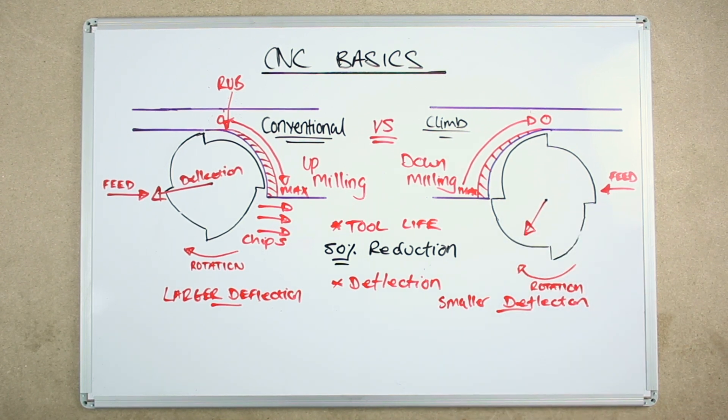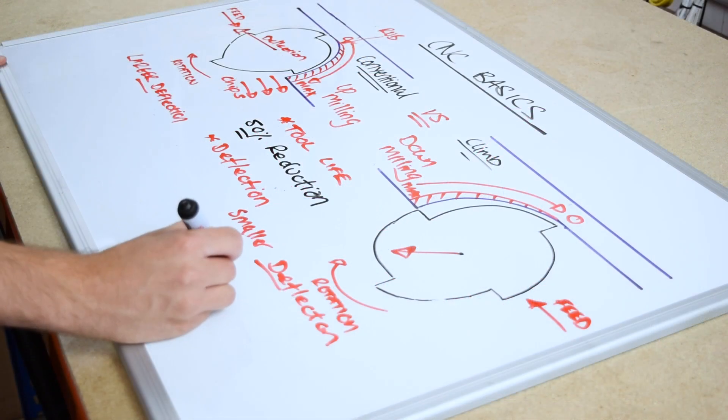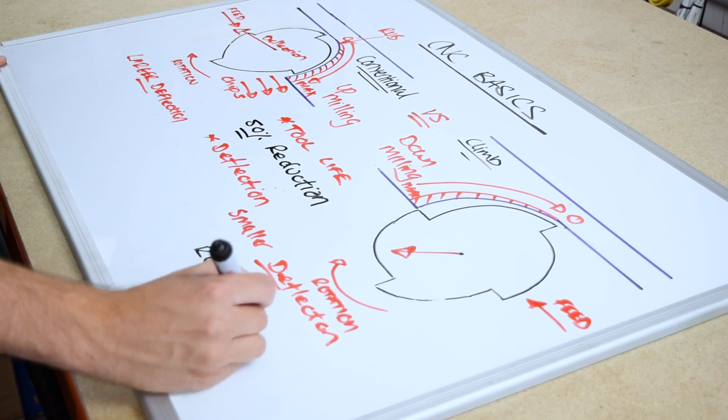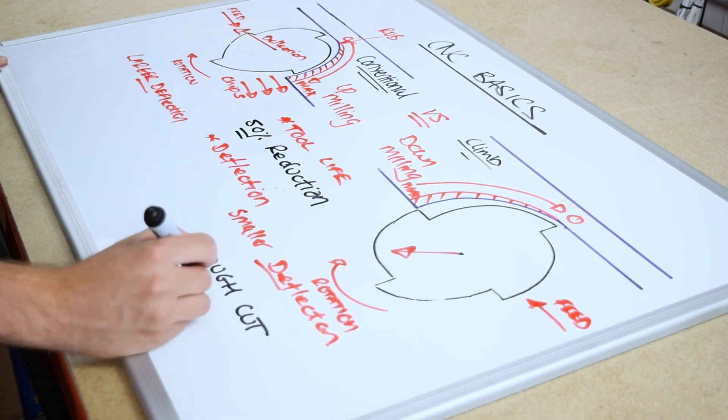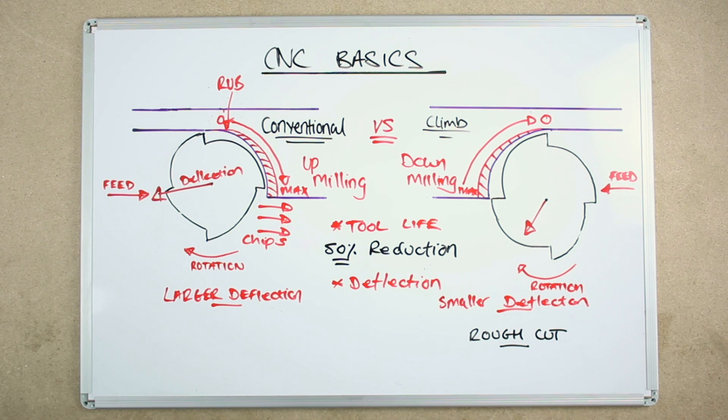From the previous points on deflection, we can determine it is normally best to rough cut using climb milling. The deflection on the end mill is smaller, so you can go quicker or use greater path steps. This is a great tip to remember when selecting your toolpaths.